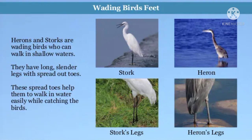Next are wading bird feet. Herons and storks are wading birds who can walk in shallow waters. They have long slender legs with spread-out toes. These spread toes help them walk in water easily while catching food. Examples of wading bird feet include storks and herons, and you can see their long legs.